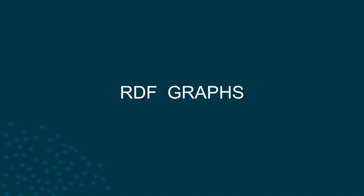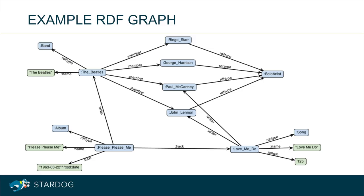Now let's dive into the technical details and start with RDF graphs. Here's an example RDF graph, a small snippet from a larger music dataset. In a graph, we have nodes representing entities and edges that represent relationships between those entities. In this graph, we have a node representing the band The Beatles, nodes representing its members, one of their studio albums, and a song from that album.